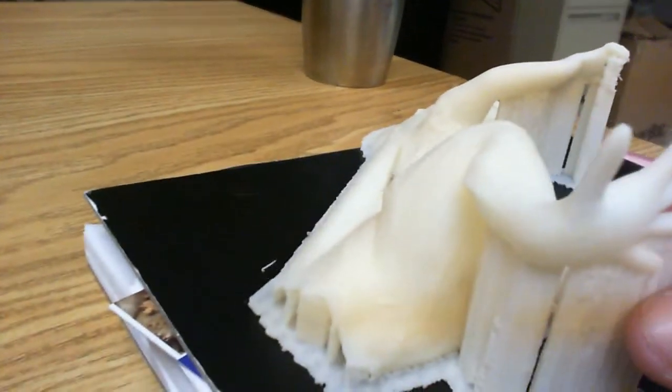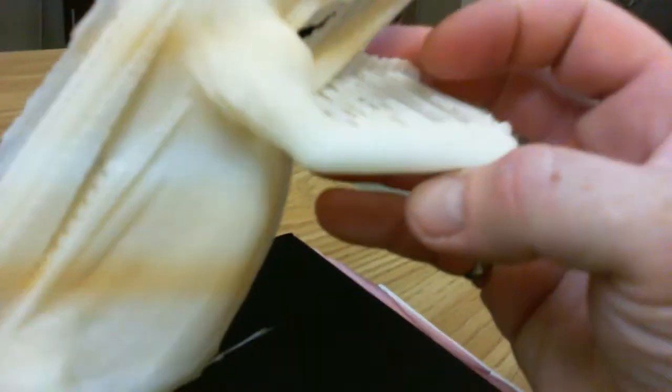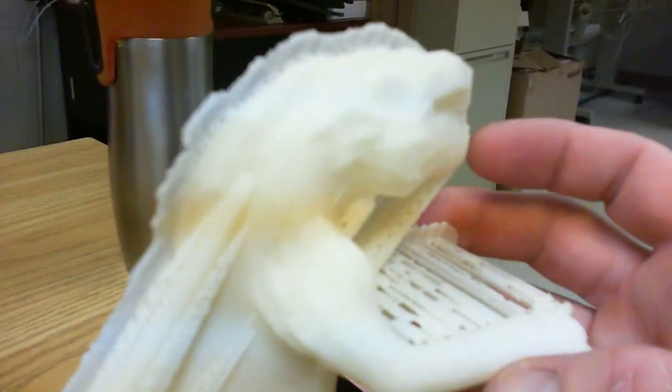So you just snap this off. This is a lizard. We're printing the right half of the lizard, and we're going to print the tail after we're done this. It gives you an idea of the progress. It looks really good.